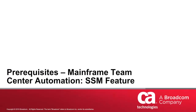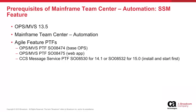This section lists the prerequisites for using Mainframe Team Center Automation SSM feature. To take advantage of the SSM feature, you must be running Ops MVS 13.5 with Mainframe Team Center Automation configured. Then install the two Agile feature PTFs and the CCS common service PTF listed on this slide. Note that you must apply the CCS PTF and start the CCS message server with the PTF applied before starting Ops MVS with the new PTF. If Ops MVS with the new PTF connects to a message service server without the CCS PTF applied, Mainframe Team Center Automation will incorrectly process SSM resource updates as rule updates. To avoid this, the CCS PTF must be active first.